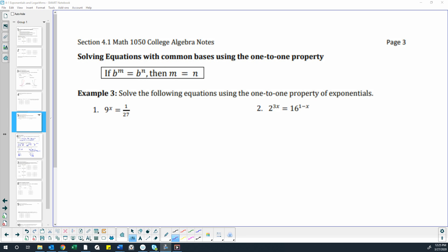Here we're going to solve some exponential equations that have common bases using the one-to-one property. So the one-to-one property is right here: if we have the same base with an exponent equaling the base with a possibly different exponent.